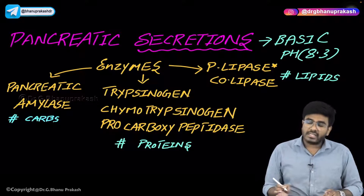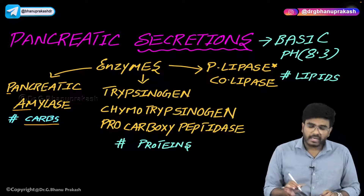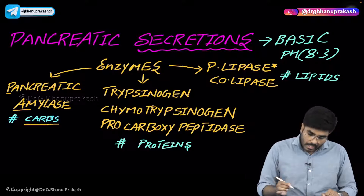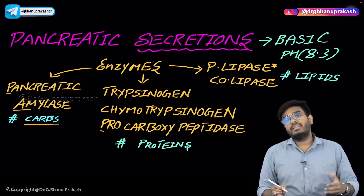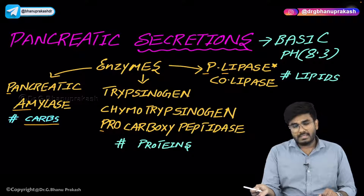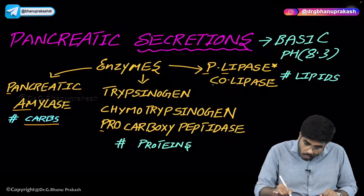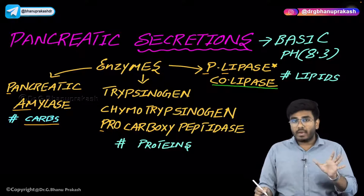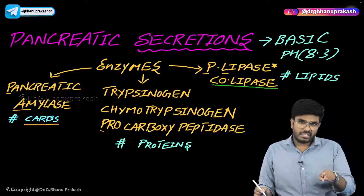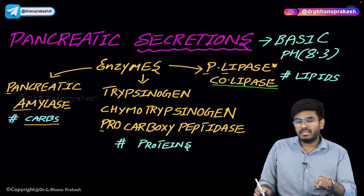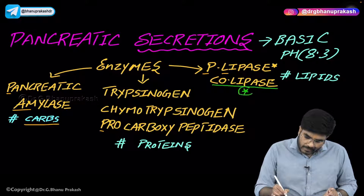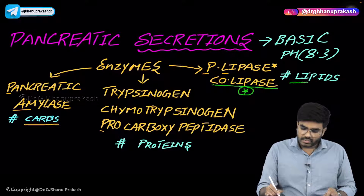What are these pancreatic enzymes? Pancreatic amylase causes the digestion of carbohydrates. Trypsinogen, chymotrypsinogen, and procarboxypeptidase help in the digestion of proteins. Pancreatic lipase as well as the important substance colipase help with lipids. This is an exam question — colipase is present in pancreatic secretions. Colipase is an enzyme present in the pancreatic secretion which helps in the digestion of lipids.